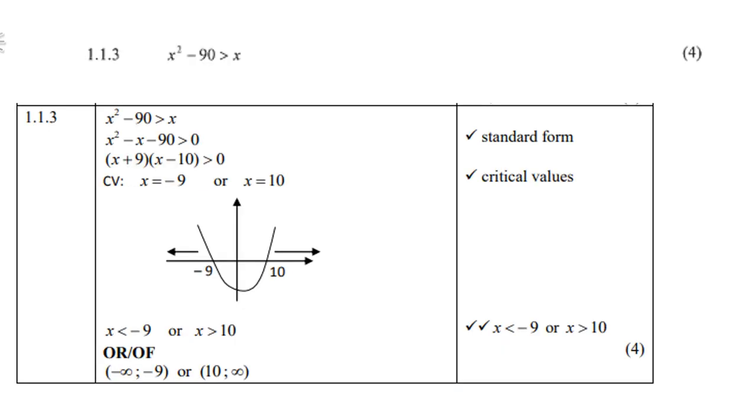All right, let's look at 1.1.3: x² - 90 > x. So this is an inequality, so please be careful. You cannot treat an inequality like an equality, there is a difference. So the method is to take the x to the left hand side. Remember we always would like to have a zero on the right hand side.